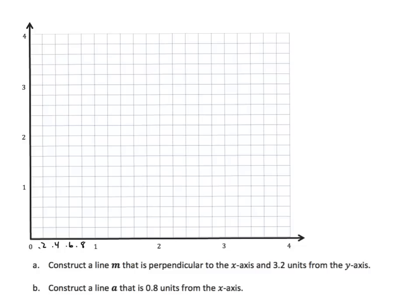We want to construct line M that is perpendicular to the x-axis — so it's going to be a vertical line — and 3 and 2 tenths units from the y-axis. Distance from the y-axis is the x-coordinate. I go to x, find 3, and each interval is 2 tenths, so right here would be 3 and 2 tenths. I make a vertical line at 3 and 2 tenths on the x-axis and label this M.